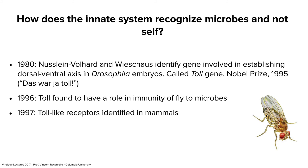The innate immune system begins with drosophila — another example of why we study worms and flies. The innate immune system was discovered first in drosophila, starting in 1980. Christiane Nüsslein-Volhard and Eric Wieschaus, both Nobel Prize winners, were studying development in flies. They found a mutation in one gene, and Christiane said 'Das war ja toll' — German for 'awesome' — and that became the name: the toll gene. This gene was important for establishing the dorsal-ventral axis; Nobel Prize 1995.